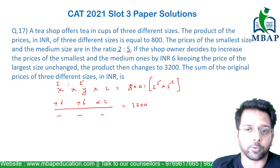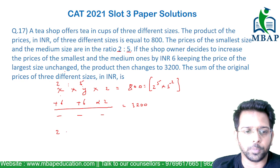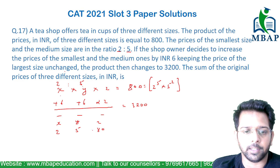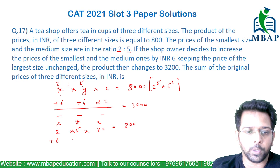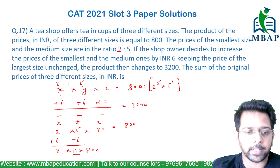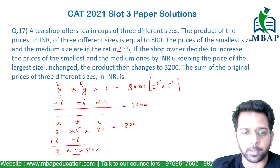We know x and y are in the ratio of 2 to 5. Let's start by assuming x = 2 and y = 5. Then z will certainly be 80, because when you multiply them the value comes out to be 800. But when you add 6 to each, x becomes 8, y becomes 11, and z stays 80.